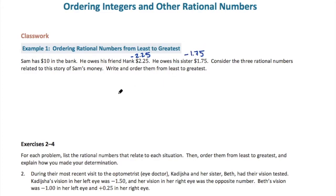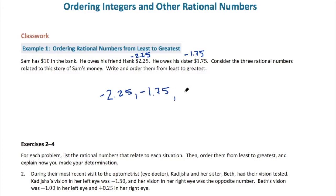What's the smallest number here? Negative $2.25 is the smallest amount, and then negative $1.75, and then finally the $10 he has in the bank — that's a positive amount.